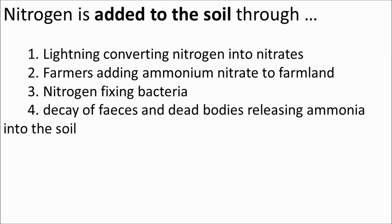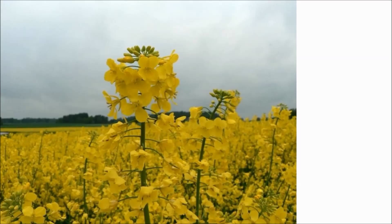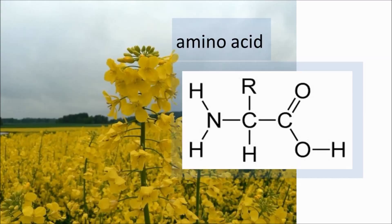So what processes remove nitrogen from the soil? Plants absorb nitrates from the soil through their roots and use these nitrates to build proteins. This is an amino acid — the building block of proteins. You can see in this diagram that nitrogen is needed to build an amino acid and therefore a protein.